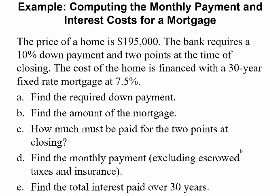Let's do an example. Suppose you buy a house where the price of the home is $195,000. The bank requires a 10% down payment and two points at the time of closing. The cost of the home is financed with a 30-year fixed rate mortgage at 7.5%. So T is 30 years, payments are monthly, and R equals 7.5%.